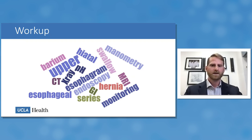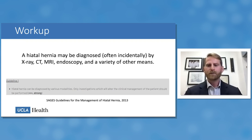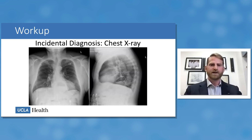The workup for hiatal hernia can seem complex. Hiatal hernias are often diagnosed incidentally on X-rays, MRIs, CTs, or endoscopy, and then we ask what additional studies are needed. An important starting principle from SAGES — with strong recommendation — is that we should not perform any studies that will not change our clinical management. It is critical to keep in mind what we hope to gain from each study and what information it will provide.